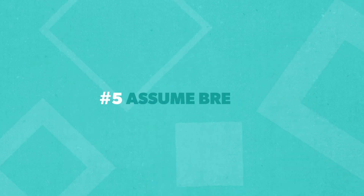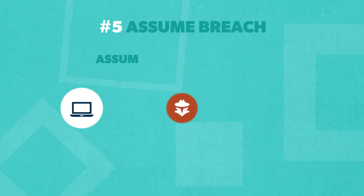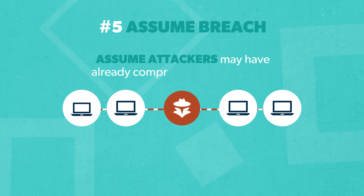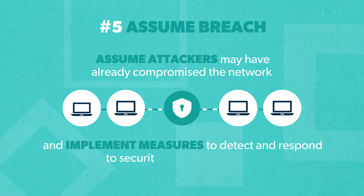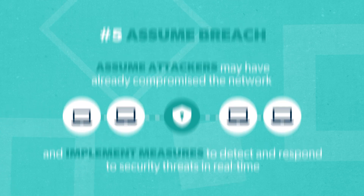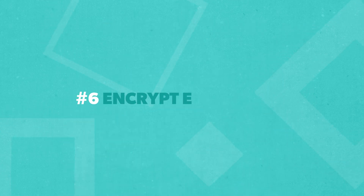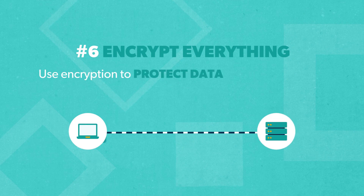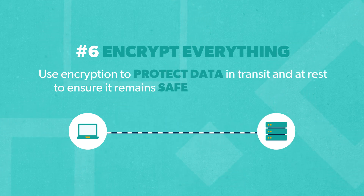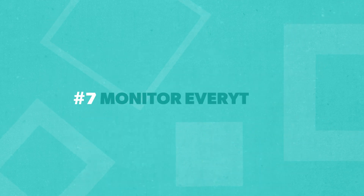Five: assume breach. Assume attackers may have already compromised a network and implement measures to detect and respond to security threats in real time. Six: encrypt everything. Use encryption to protect data in transit and at rest to ensure it remains safe in the event of a breach. Seven: monitor everything. Monitor and log all networks and user activity for rapid detection and response.